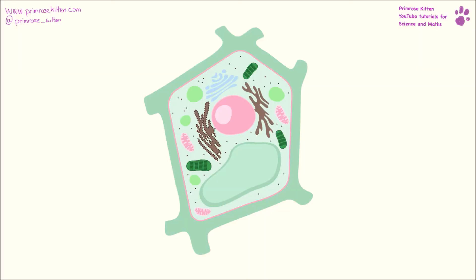Here is our beautiful plant cell. Starting on the outside, we have our cell wall. This is responsible for keeping the shape of the cell, keeping it rigid when it needs to be, so that the plant doesn't lose its structure.